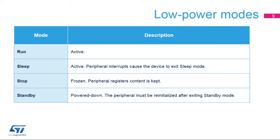The JPEG Codec is active in run and sleep modes. A JPEG Codec interrupt can cause the device to exit sleep mode. In stop mode, the JPEG Codec is frozen and its registers' content is kept. In standby mode, the JPEG Codec is powered down and it must be re-initialized afterwards.